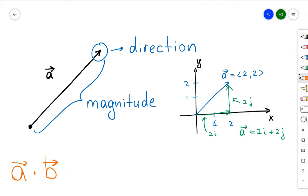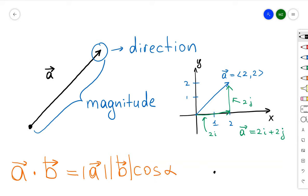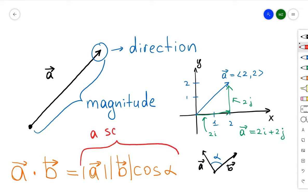We also discussed that we can take dot products of two vectors. In that case, the product is going to be equal to the absolute value of A times the absolute value of B times cosine alpha, where A, B, and cosine alpha combine to give a scalar. And remember, the meaning of the dot product when B is a unit vector is just how far the direction of vector A is from the direction of vector B.